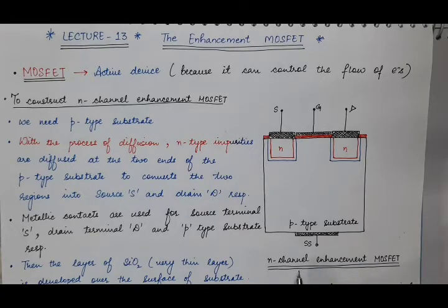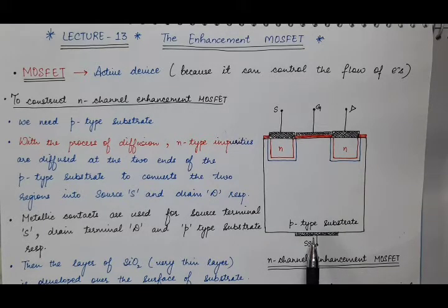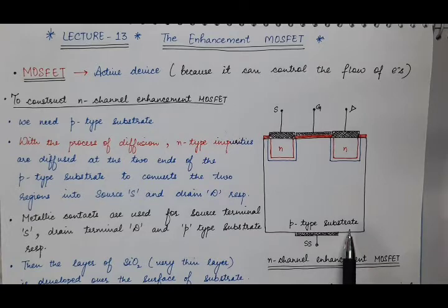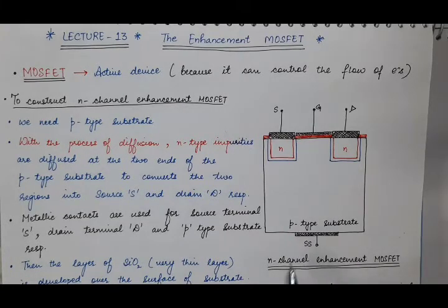To construct an N-channel enhancement MOSFET, we use a P-type substrate. And if you have to construct a P-channel enhancement MOSFET, in that case you will use an N-type substrate. To construct N-channel, we use P-type substrate; to construct P-channel, we use N-type substrate.